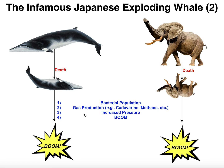Whales and elephants are some of the largest organisms on the planet. From the bacteria's point of view, there's enough biomass available to convert into gases such as methane that the pressure can increase to the point where it actually explodes. This is why you'll never see it in smaller organisms like humans — it's only going to be in very large organisms such as these two. The bigger they are, the harder they explode.